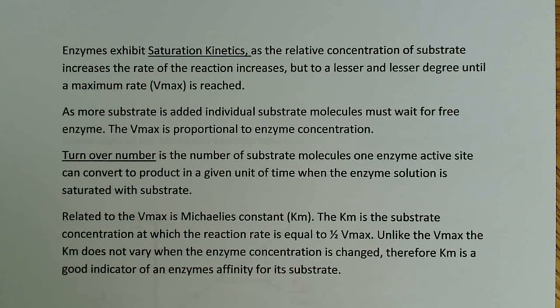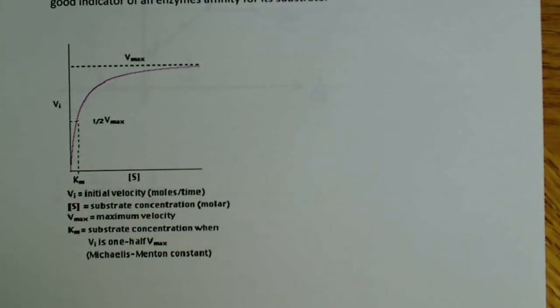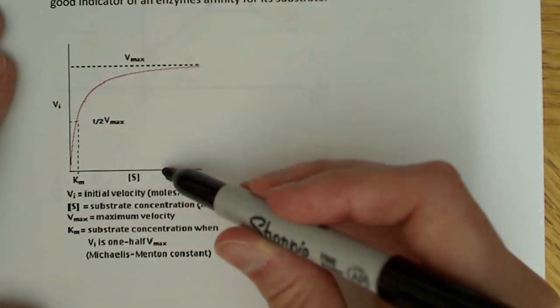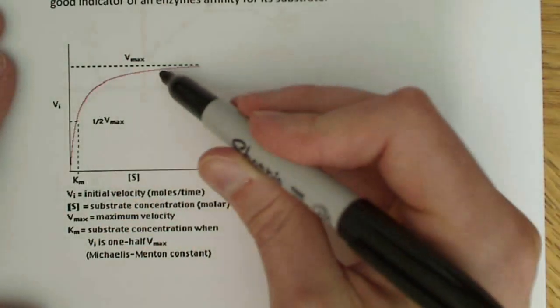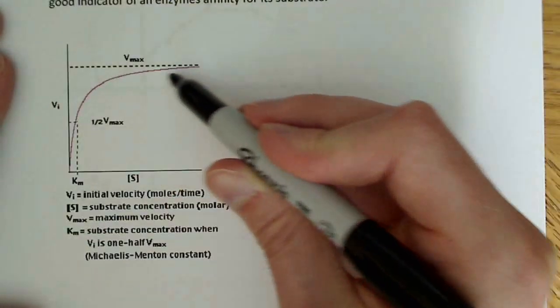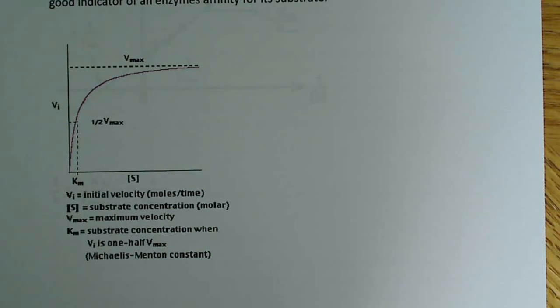The Vmax is proportional to the enzyme concentration. We can see this visually on the graph here — it's a hyperbolic curve, similar to myoglobin. The x-axis is the concentration of substrate, and here's the Vmax. As we increase the concentration of substrate, the graph shoots up really sharply at the beginning, but then it levels off as it approaches Vmax. That's what is meant by saturation kinetics — the rate increases initially but to a lesser and lesser degree as Vmax is approached.